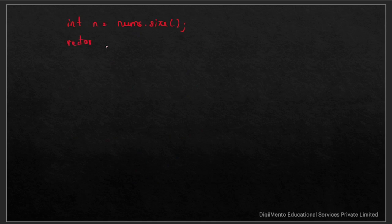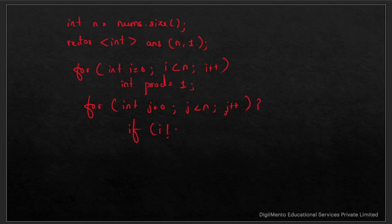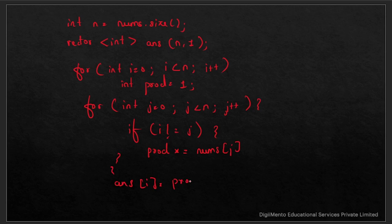In the brute force code, we create vector<int> answer(n, 1). The outer for loop runs i from 0 to n. Inside, we declare int product = 1. The inner for loop runs j from 0 to n. If i != j, then product *= nums[j]. Finally, answer[i] = product. We return our answer vector.